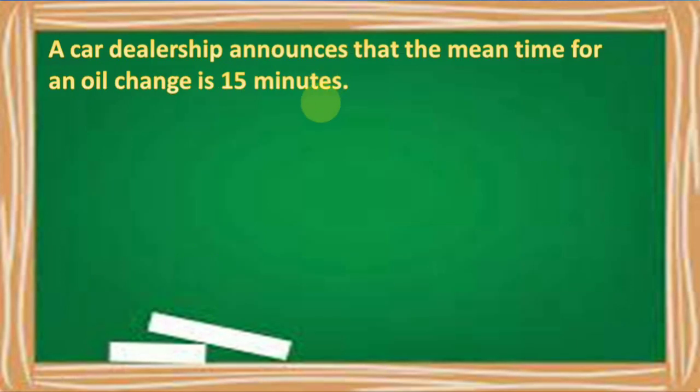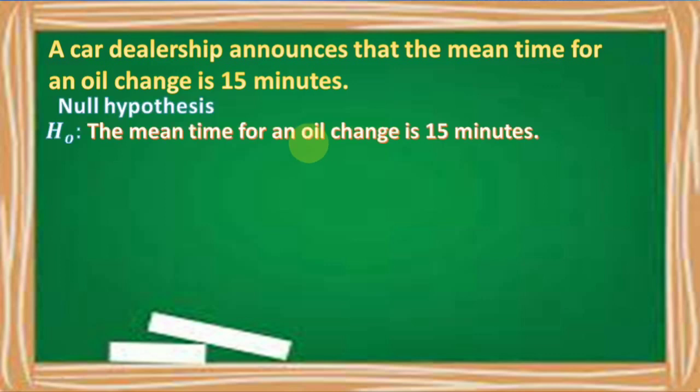Let's have an example. Say a car dealership announces that the mean time for an oil change is 15 minutes. For this given scenario, our null hypothesis will be: the mean time for an oil change is 15 minutes. In symbol, we have mu is equal to 15 minutes.